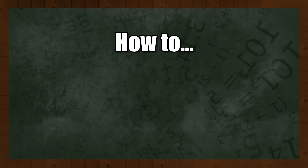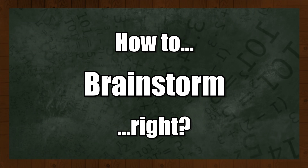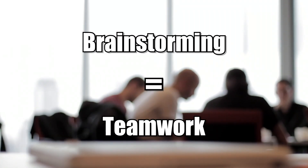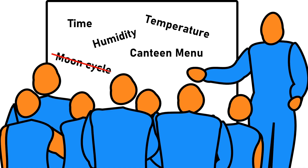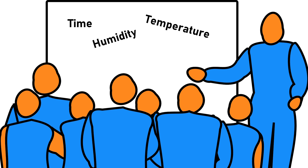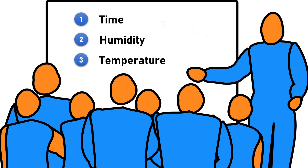We want to identify all the possible variables that might affect the quality of our paint. As a first step, we can do a brainstorming. The most important thing in brainstorming is to separate the idea generation from the idea evaluation. First, only shoot ideas out. When you've written everything down, you start evaluating these different variables and maybe rank them from highest impact to lowest impact.